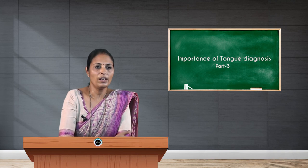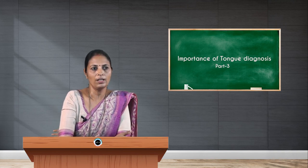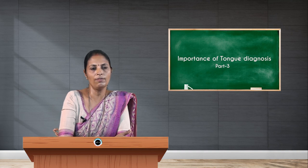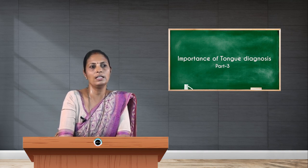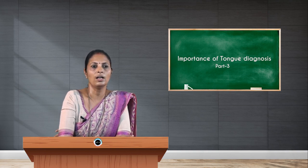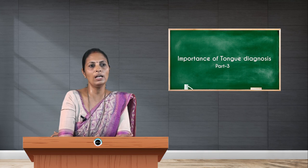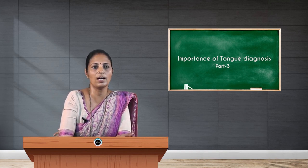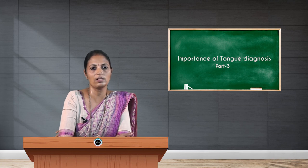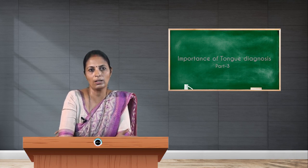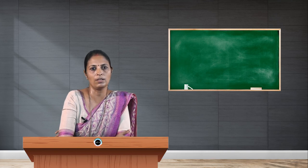By using the different colors, shapes, and structures of the tongue, we can identify excess or deficiency in the five elements as well as in the internal organs. We should correlate these findings with the patient's symptoms, signs, and other factors including psychological factors, which help in proper diagnosis and management. Thank you.